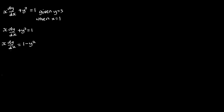For this to be easy for us, I'm going to reverse this differential equation — I'm going to write it in inverse form. When I do this, we are going to have x become 1 over x, and the dy/dx will become 1 over dy/dx, and this will be equal to 1 over (1 minus y squared).